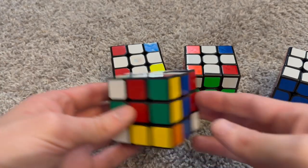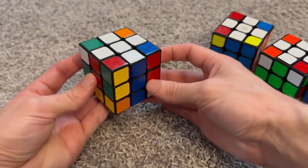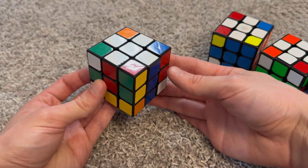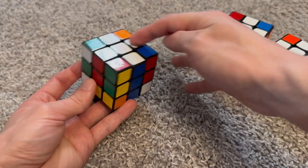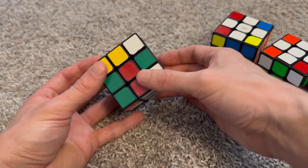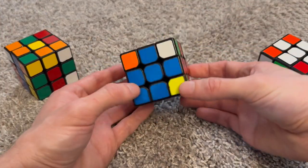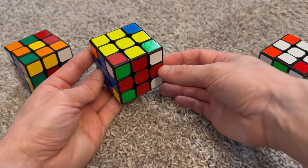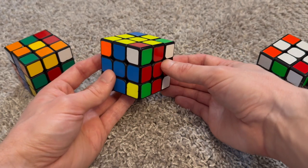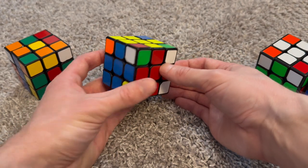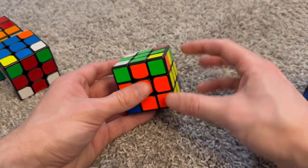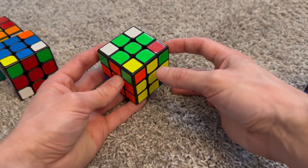But it starts off, as you would expect any method, that it's a cross-first method, and then from the cross, you're going to go to middle layer edges, and then last layer edges. So once that's done, a cube would look something like this, once you have all the edges done.